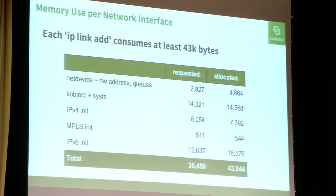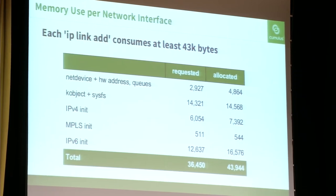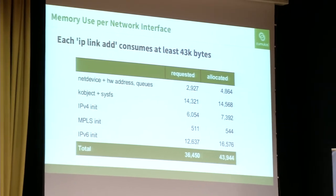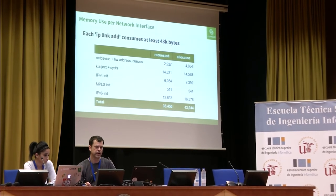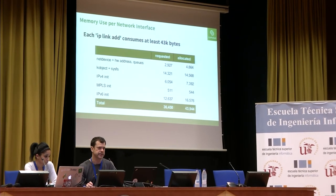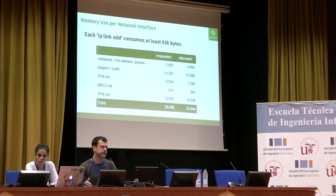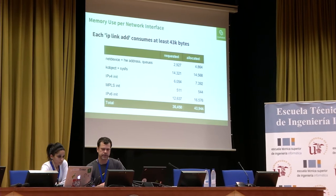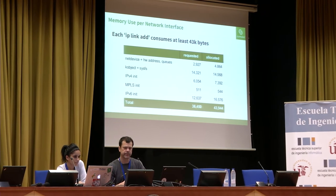The net device structure itself is only 2,900 bytes, but that rounds up to 4,864 bytes when accounting for the allocator. That 4,864 covers the net device plus hardware addressing plus queues. The other ~40 KB is consumed by runtime malloc'd items: creating directory and file entries in /sys accounts for another 14 KB, and the IPv4/IPv6 initializers that automatically run on every net device creation allocate additional data structures preparing for addresses.